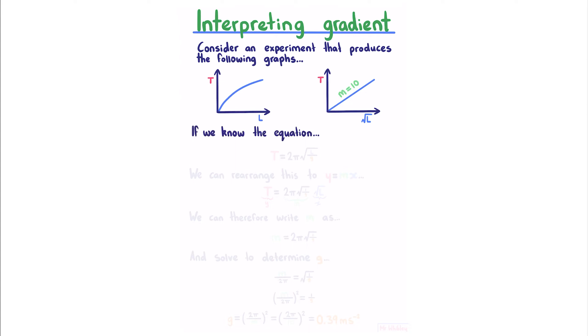If we know that the equation for this experiment is t equals 2 pi the square root of l over g, which is the equation for a simple pendulum, we can rearrange this in the form of y equals mx, which involves taking the l and putting it into its own square root. Where t is our y, 2 pi times 1 over square root g is our m, and the square root of l is our x. We can therefore write our gradient as m equals 2 pi the square root of 1 over g, and solve this to determine g. So if we divide both sides by 2 pi, square both sides, and then take the inverse of both sides, we can substitute our m which is 10, and get an answer of 0.39 meters per second per second.